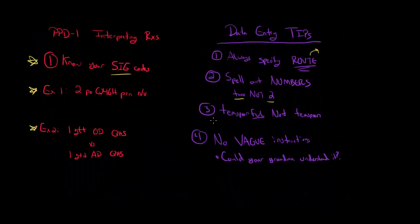To conclude the video, let's go back up and see what the interpretations of these are. This one would be two tablets by mouth every four to six hours as needed for nausea and vomiting. So take two tablets by mouth every four to six hours as needed for nausea and vomiting.